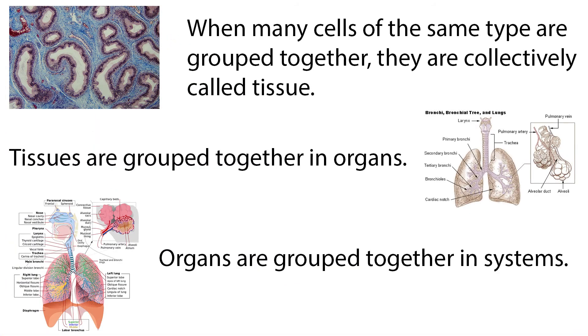Specialized organelles like mitochondria and chloroplasts have specific functions within the cell. Different types of cells have different functions. When many cells of the same type are grouped together, they are collectively called tissue. Tissues are grouped together in organs, and organs are grouped together in systems.